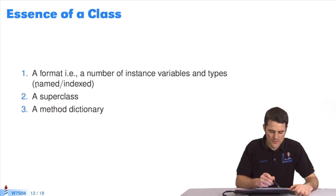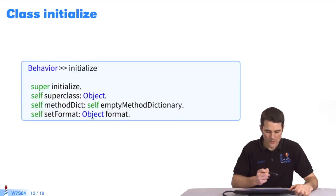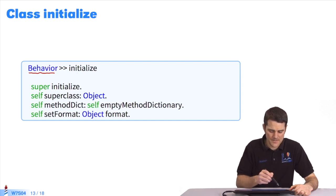Let's look at what a class is in essence. A class is essentially a format. A format specifies the number of instance variables and the type of variables, as we explained in an earlier course. It has a superclass and a method dictionary. Here, we have behavior class, which is a superclass of class class, which defines basic class behavior. It's the basic minimum for a class. So, a class has a superclass, a method dictionary, and format specifications.